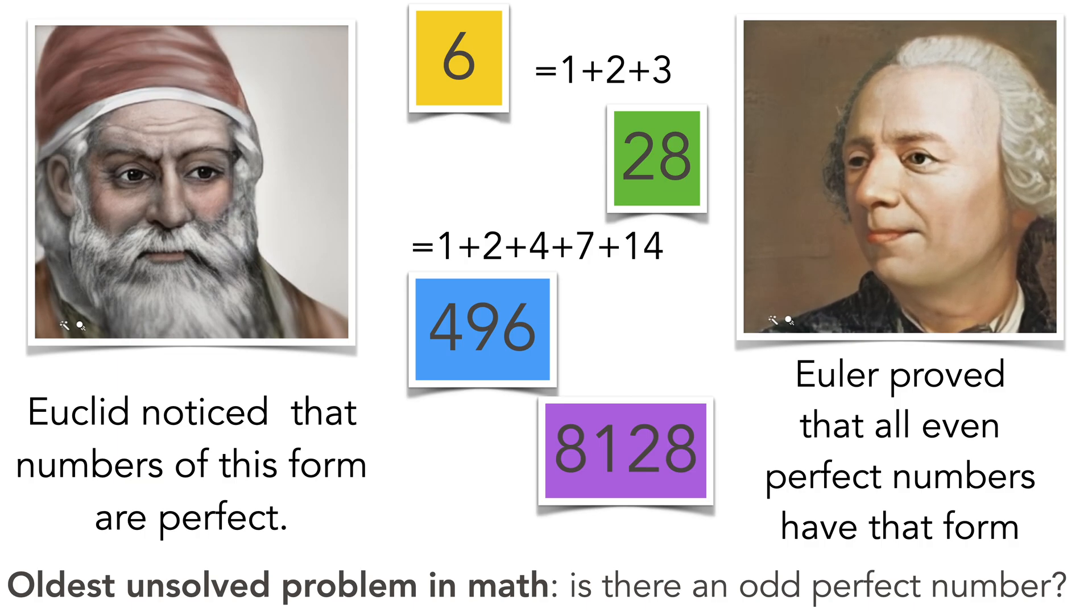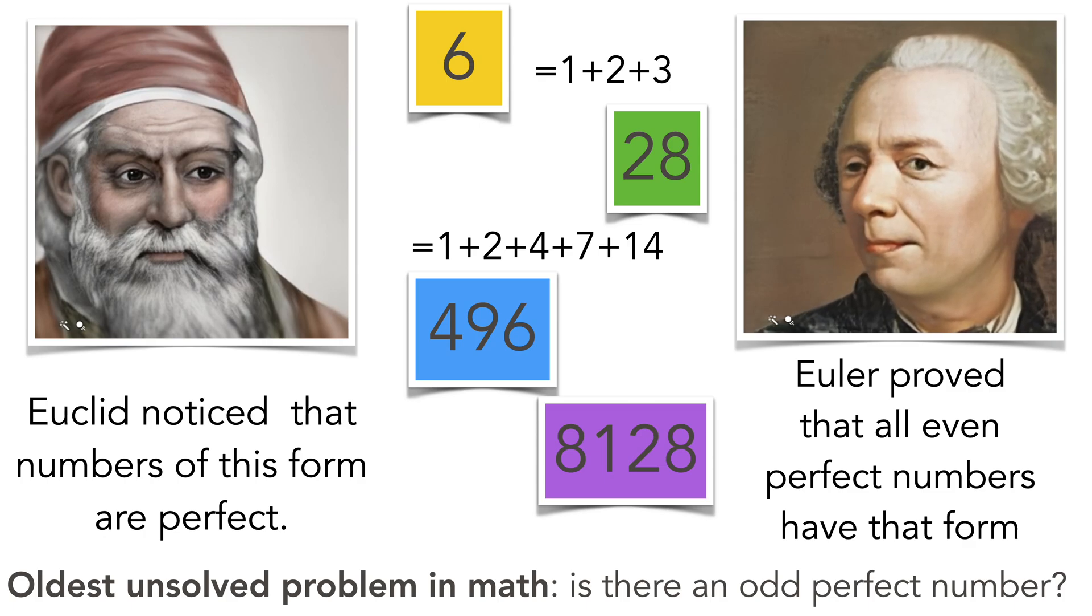One of the oldest problems in math, maybe the oldest open problem in math, is the question whether there are odd perfect numbers. Nobody knows.